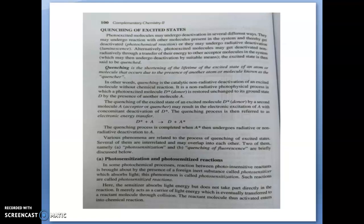So we can define quenching as the shortening of the lifetime of an excited state of an atom or molecule. How does this shortening of lifetime happen? It occurs due to the presence of another atom or molecule that can absorb this radiation or that energy. That type of molecule is known as a quencher — the molecule which is accepting the energy from an excited molecule is known as a quencher.